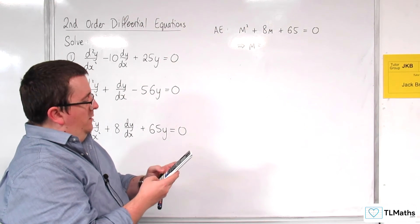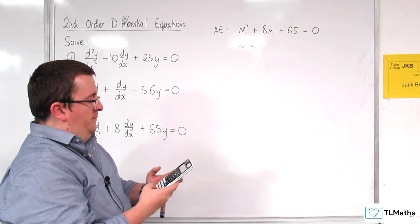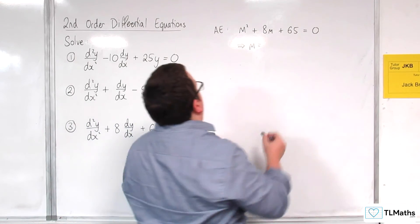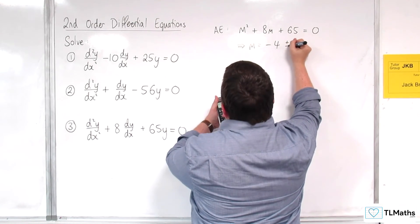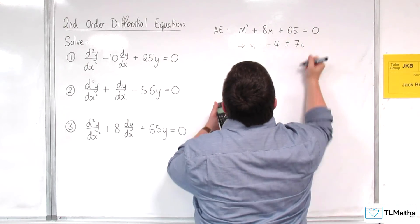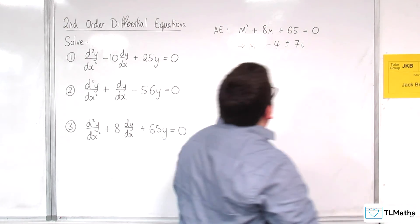So 1, 8, 65. And we get -4 ± 7i. OK, so we've got complex roots here.